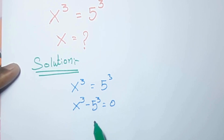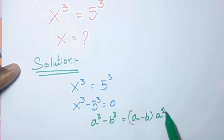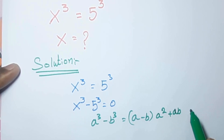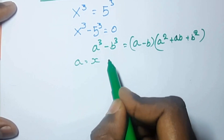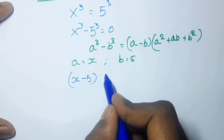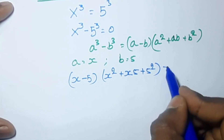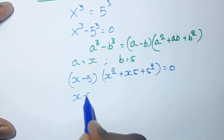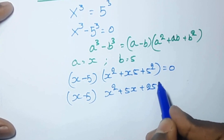We are going to apply this formula: a cube minus b cube equal to a minus b, times a square plus ab plus b square. Here the value of a equal to x and b equal to 5. So we get x minus 5, times x square plus x times 5 plus 5 square, equal to 0.